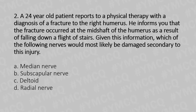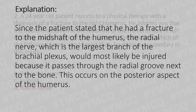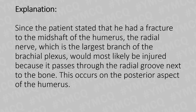And the answer is Option D: Radial nerve. Explanation: Since the patient has stated that he had a fracture to the mid-shaft of the humerus, the radial nerve, which is the largest branch of the brachial plexus, would most likely be injured because it passes through the radial groove next to the bone. This occurs on the posterior aspect of the humerus.